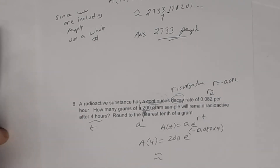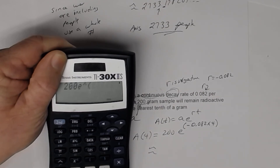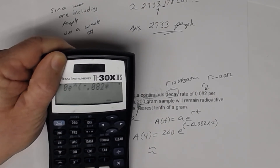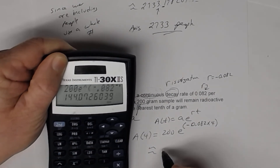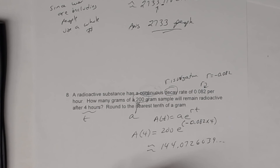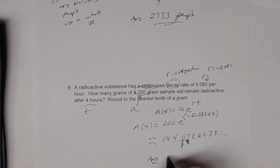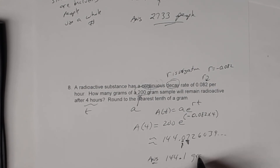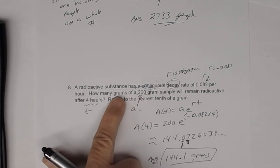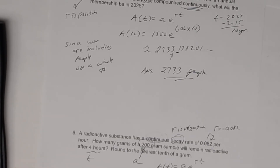So A(4) = 200 times e to the (negative 0.082 times 4). Using the calculator, we get approximately 144.0726... Rounded to the nearest tenth: the hundredths digit is 7 — five or bigger — so we add one to the tenths place. The answer is 144.1 grams. You started with 200 grams, and after four hours 144.1 grams remain. That concludes the lesson on continuous growth and decay applications.